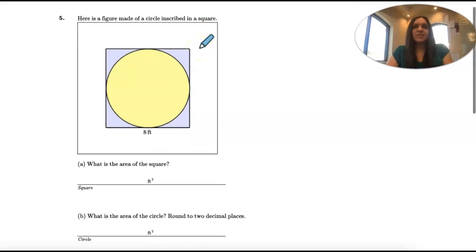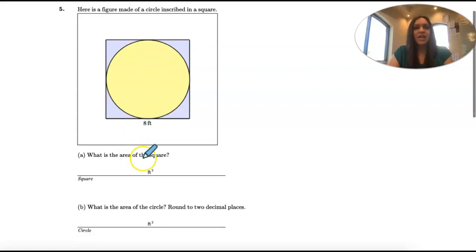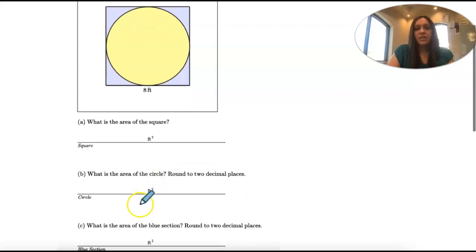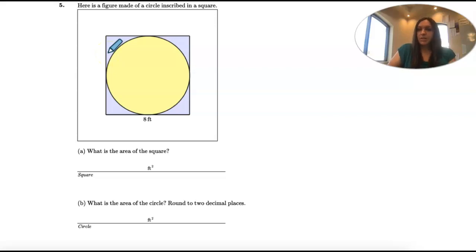We have a figure made of a circle inscribed in a square, so a circle inside a square. We want to find the area of the square, the area of the circle, and then the area of the blue section. That's going to walk us through how to get to the area of the blue section.